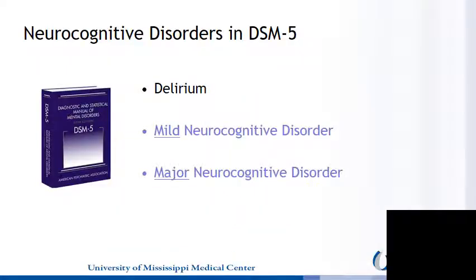The Diagnostic and Statistical Manual of Mental Disorders, 5th edition, identifies three main categories of neurocognitive disorders. These include delirium, mild neurocognitive disorder, and major neurocognitive disorder. In the previous module, we reviewed delirium, which is a temporary, time-limited state. Now we will discuss the difference between mild and major neurocognitive disorders, which are enduring cognitive disorders.